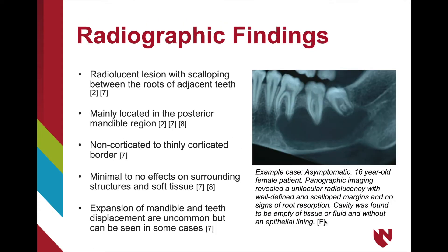Radiographic presentation includes a characteristic scalloping border between the roots of adjacent teeth, typically in the posterior mandible region. The lesion's border is non-corticated to thinly corticated and has little to no effects on surrounding structures and soft tissue. Although there is generally no expansion present, it is seen on rare occasions along with teeth displacement.